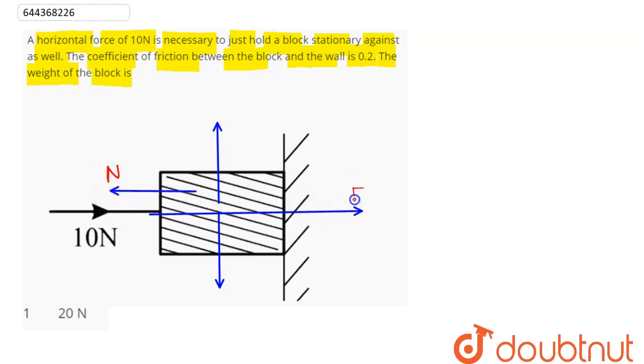So this is the normal reaction, this is the external force given here as 10 newton, this will be the friction which prevents the sliding of the block due to its own weight. We need to find the weight of the body.